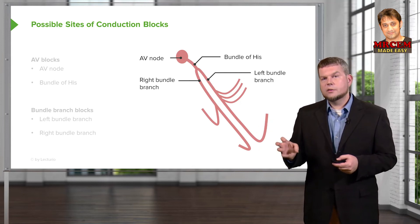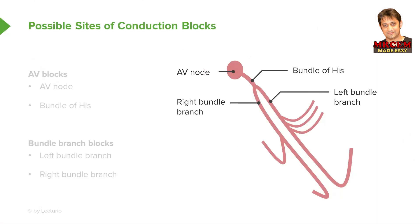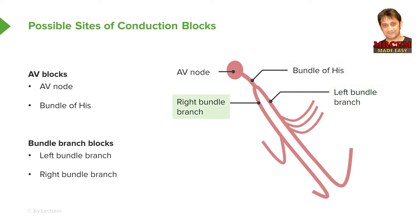The AV node is one area of pathology. A lot of problems happen with the AV node — maybe it slows conduction too much and doesn't let it move through very rapidly. There can also be blocks in places like the bundle of His, or in the bundle branches — right or left — and each one will look a little bit different on an electrocardiogram. We focus on the bundle branches and AV node because they are the most important.